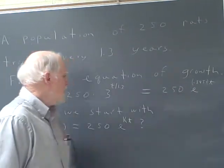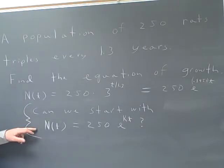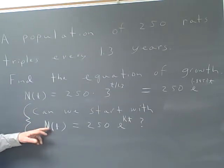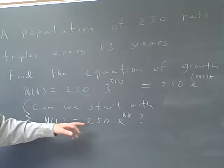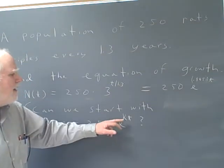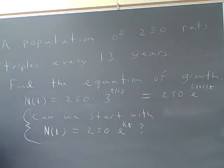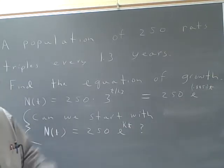But the question is, could we have just started with base e? Could I just start with the idea that the number I'm going to have is the number I start with times e to the kt and find k directly? That's what we're going to do over here.